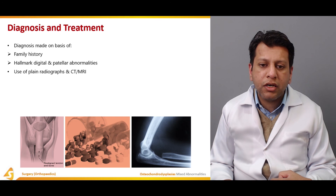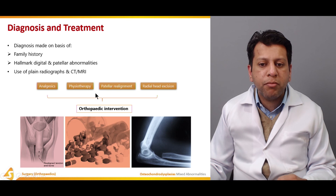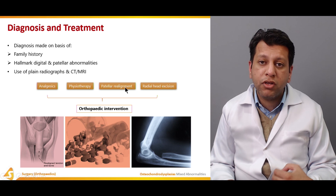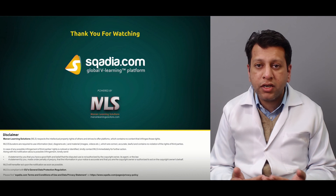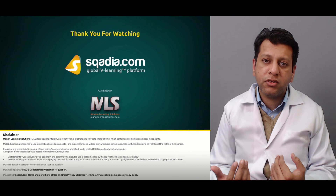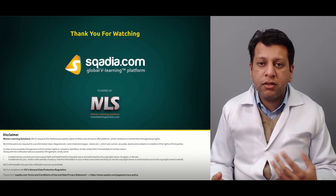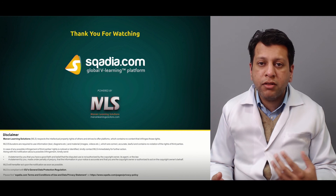Diagnosis is classically based on family history. The hallmark is digital and patellar abnormalities. Unit planes, radiographs, CT, and MRI are used for assessment. Classical treatment includes analgesics, physiotherapy, patellar realignment if needed, and radial head excision if recurrent subluxation is causing elbow instability. In summary, we have discussed diseases that do not affect a specific site but can affect the physis, epiphyses, metaphyses, or any region of the bone. These skeletal dysplasias have a genetic component, so the main aim of treatment is managing the complications, not the disease itself.